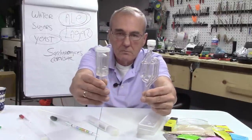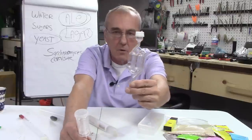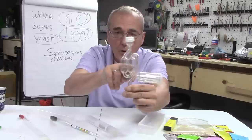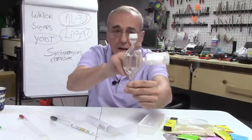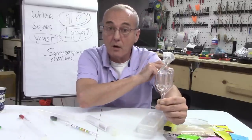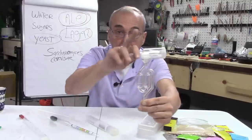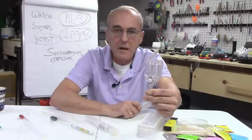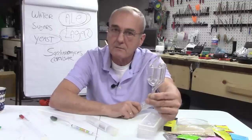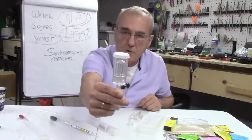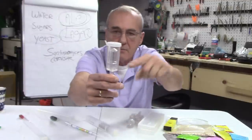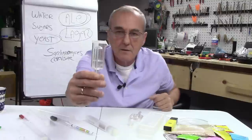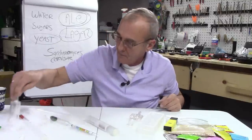We covered the airlocks — a three-piece and the double bubble. They're self-explanatory: you put water in up to the line, and it allows CO2 — one of the byproducts of yeast — to escape, and it doesn't allow oxygen to get back in. Remember, oxygen is your worst enemy after fermentation begins. The three-piece does the same thing — you fill it up to the line and that center piece will bounce up and down allowing CO2 to escape.